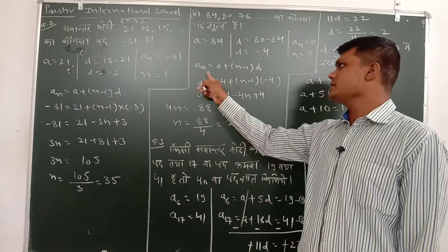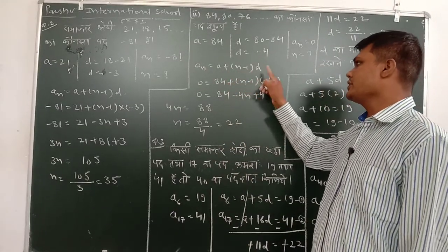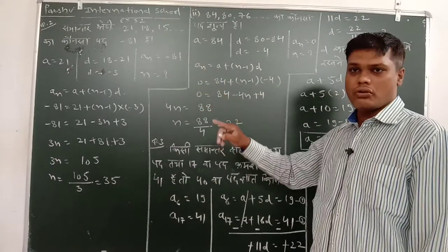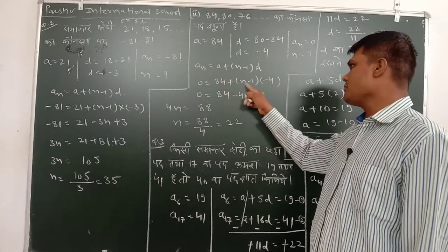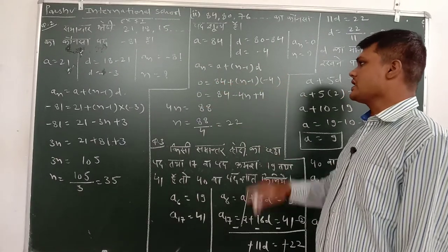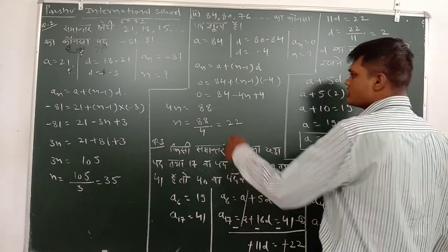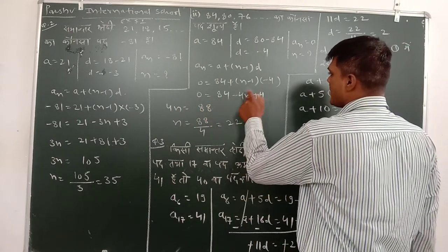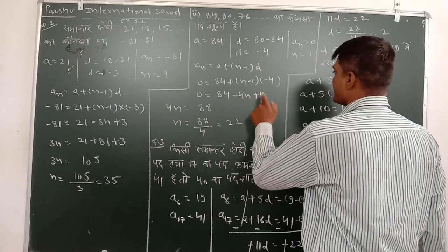So hame na formula la gaya: an is equal to a plus n minus 1 into d. An kaman 0 barabar 84 plus n minus 1 into minus ka 4. To ye kitna hoga ye? 0 barabar 84, ye minus ka 4n, or minus minus plus 4.